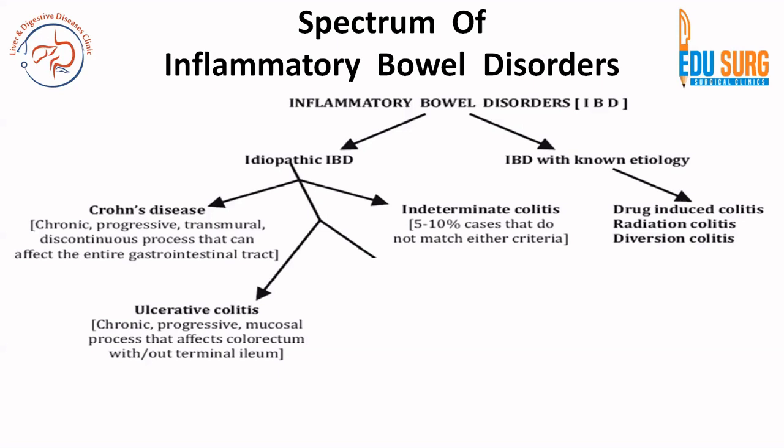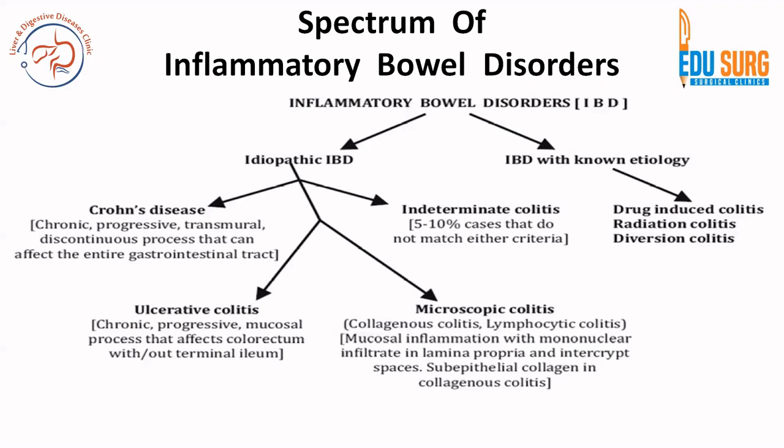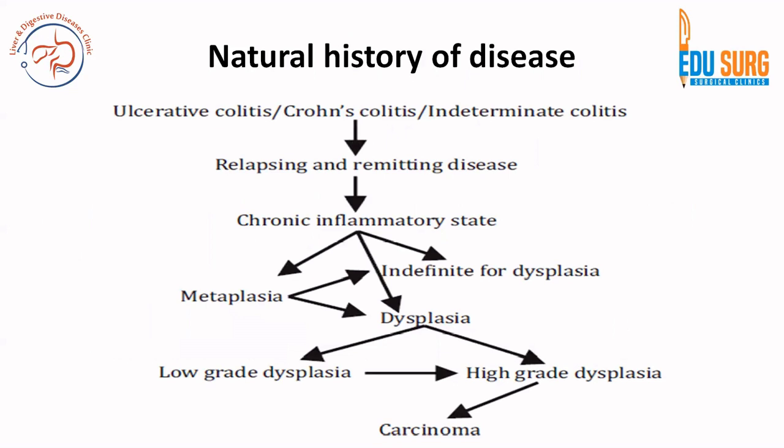You can also have indeterminate colitis — roughly 5 to 10 percent of patients in practice who do not match either Crohn's or UC criteria. Additionally, there is microscopic colitis, also known as collagenous colitis or lymphocytic colitis. This involves mucosal inflammation with mononuclear cell infiltrate in the lamina propria and inter-crypt spaces, with sub-epithelial collagen deposition in the collagenous subtype. All these etiologies together form the spectrum of inflammatory bowel disorders.